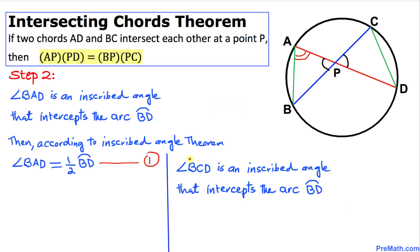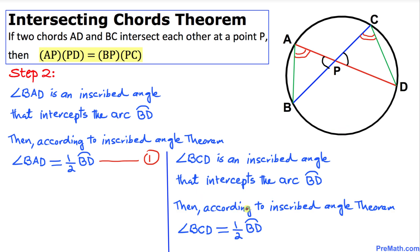Now let's focus on angle BCD. It is also an inscribed angle that intercepts arc BD. Therefore, according to the same inscribed angle theorem, angle BCD equals half of arc BD. We'll call this equation number 2.